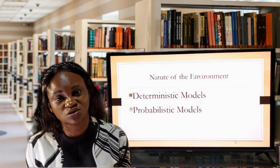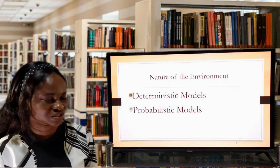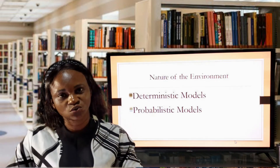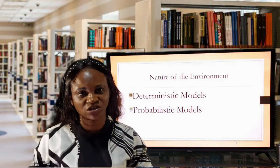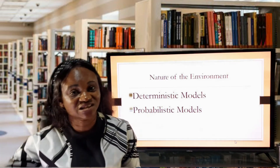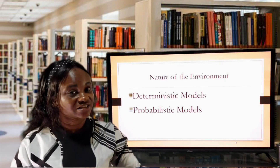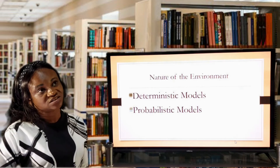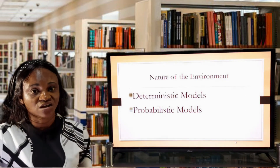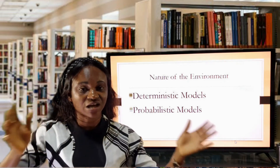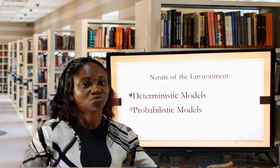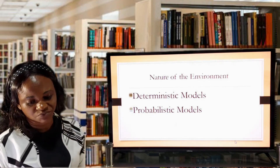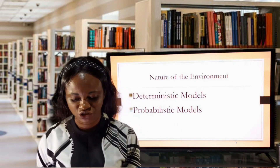A lot of people have criticised this model because in reality things are not constant. The probabilistic model, however — also called a stochastic model — gives you the opportunity to leverage on the time value of money. It takes into consideration the uncertainty in the environment, and that is why it is called probability. We have our decision tree which deals with the time value of money, your net present value, your internal rate of return — all of those models can be classified as probabilistic models, dependent on the nature of the environment.